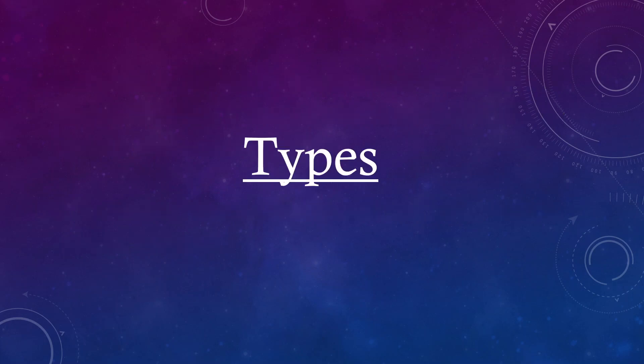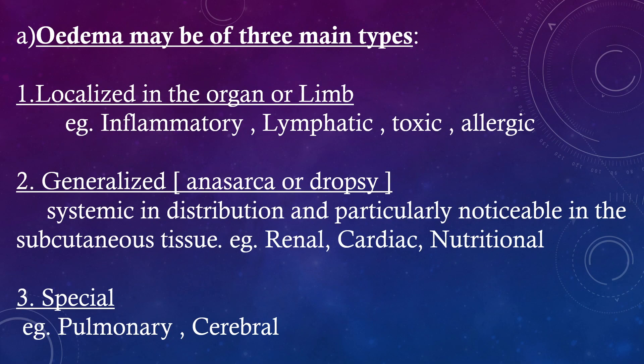Types. Edema may be of three main types. First, localized — in an organ or limb; examples include inflammatory, lymphatic, toxic, and allergic edema. Second, generalized — also called anasarca or dropsy — systemic in distribution and particularly noticeable in the subcutaneous tissue; examples include renal, cardiac, and nutritional edema.